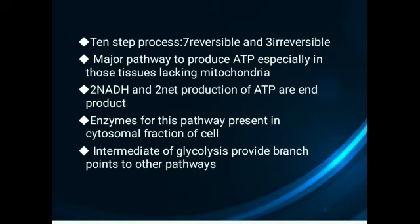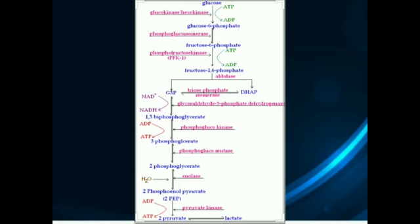Enzymes for the glycolysis pathway are present in the cytosolic fraction of the cell. Intermediates of glycolysis provide branch points to other pathways. This diagram shows how a glucose molecule is broken down into two pyruvate molecules within a series of reactions by the use of enzymes. Each enzyme is specific for its own function.